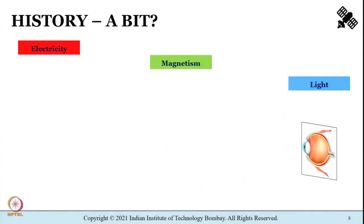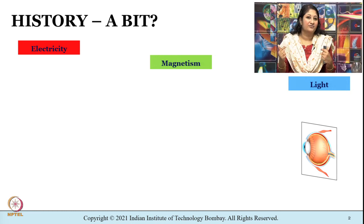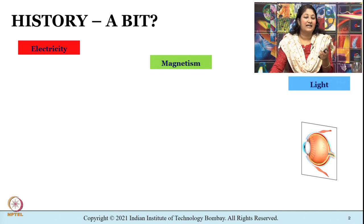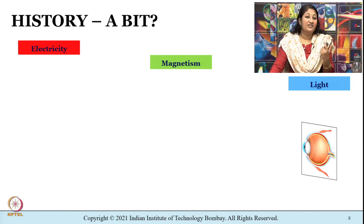The history of microwaves goes back at least 200 years ago, when electricity, magnetism and light were three different phenomena. They were considered unconnected in the minds of scientists. In the 18th and 19th century, these three phenomena — electricity, magnetism and light — were being investigated by a wide range of philosophers and scientists.